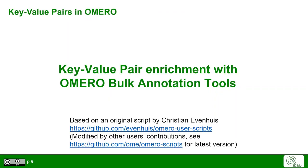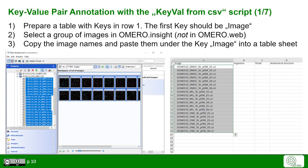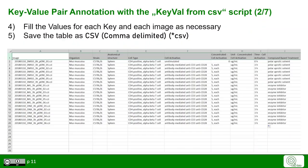Next, we focus on key-value pair annotation with the OMERO bulk annotation tools. This depends on a script originally designed by Christian Evenhus and modified by community contributions. You use a tabular format: create a table where the first row contains the keys in each column, and the first column in the first row must be labeled "image". In OMERO Insight, you can select a group of images and copy their names into the tabular format under the key image, then fill out all individual values for each image.